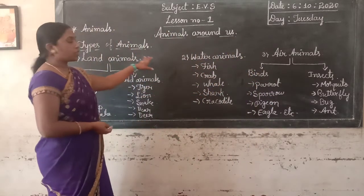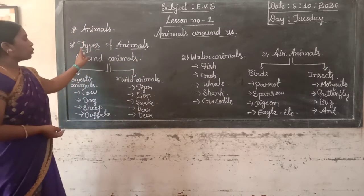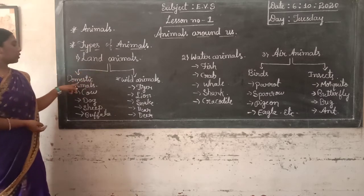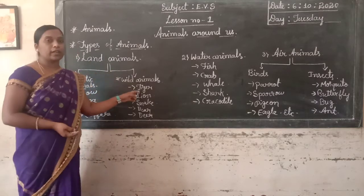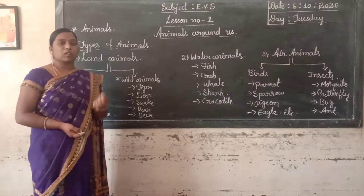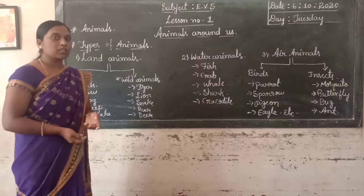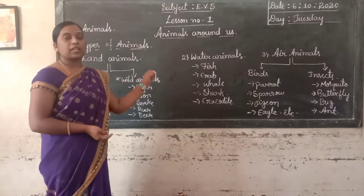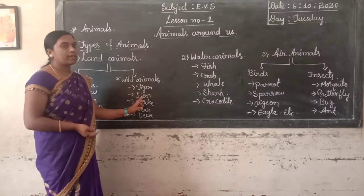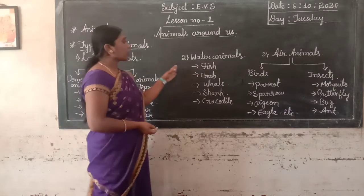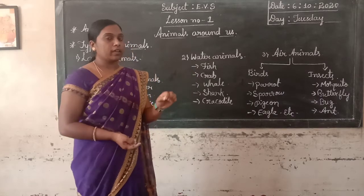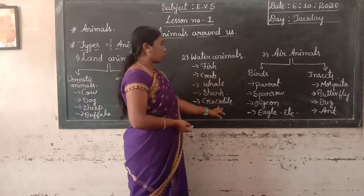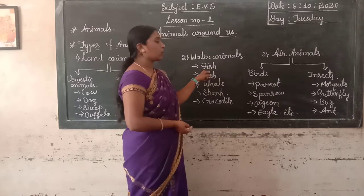Today's topic is animals and types of animals. We divide them into three groups: land animals, water animals and air animals. Land animals are further divided into two groups: domestic animals and wild animals. Domestic animals depend on shelter, food and water from humans — examples are cow, dog, and sheep. Wild animals live in the forest — examples are tiger, lion, snake, and deer. Water animals live in water — examples are fish, crab, whale, and crocodile. Fish cannot live without water.